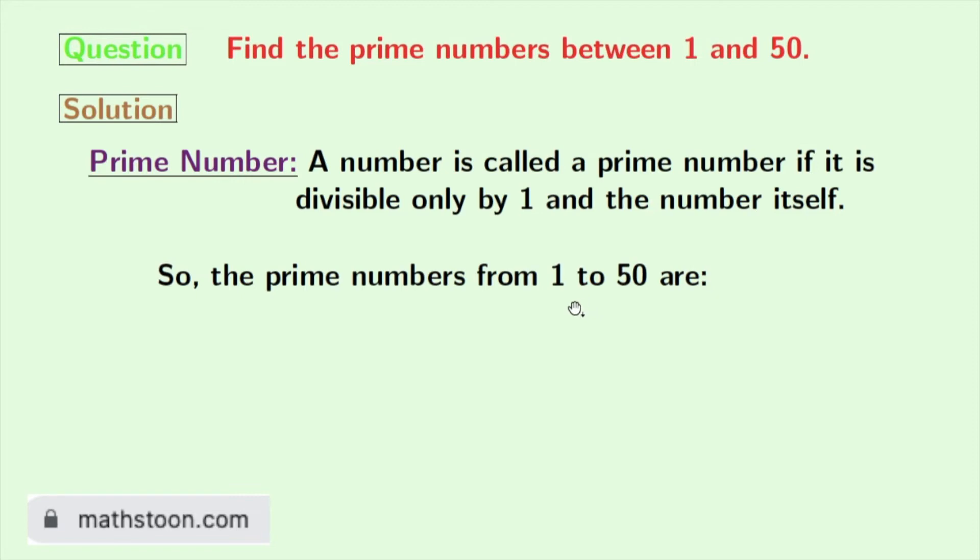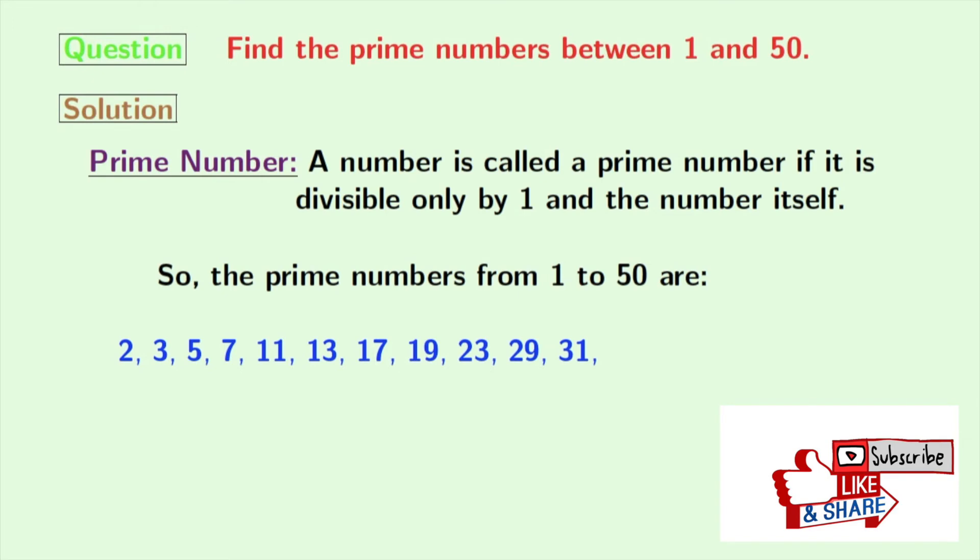the numbers which are prime between 1 and 50 are 2, 3, 5, 7, 11, 13, 17, 19, 23, 29, 31, 37, 41, 43, and 47.